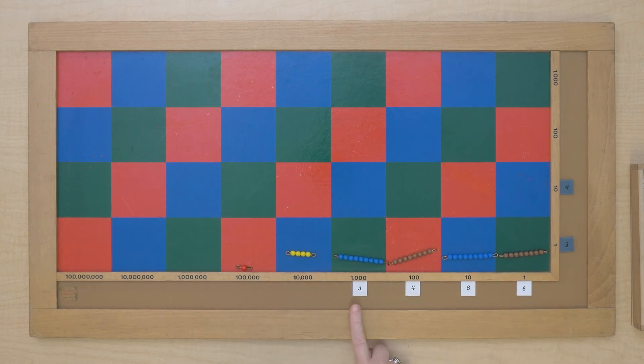So we multiplied 3,486 by 43, and the result is 149,898.